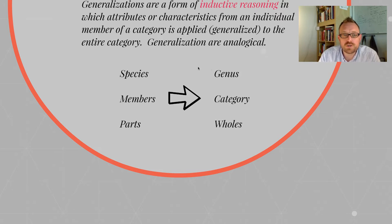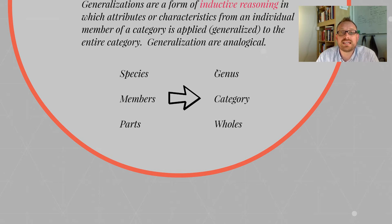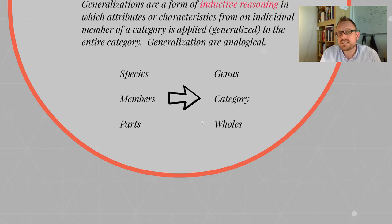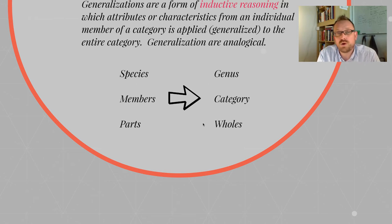You can see here how the basic function of a generalization works, and also in what ways we can make bad analogical arguments. Some characteristics of the parts do not necessarily apply to the whole.